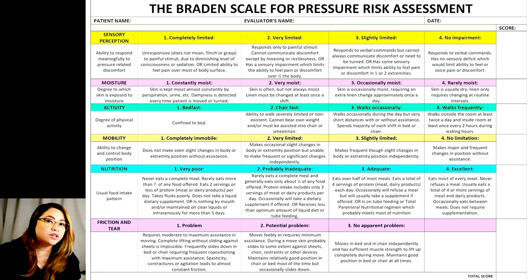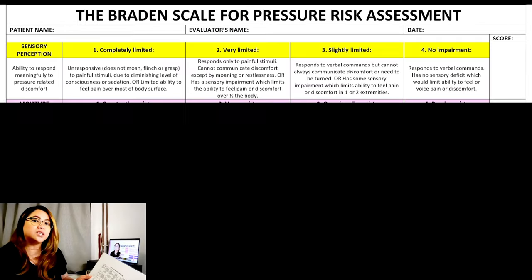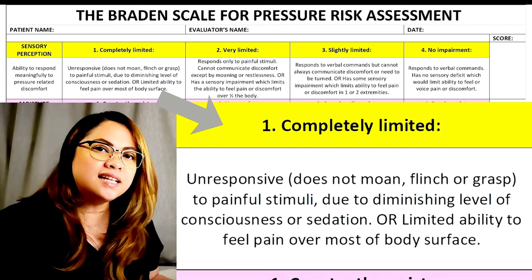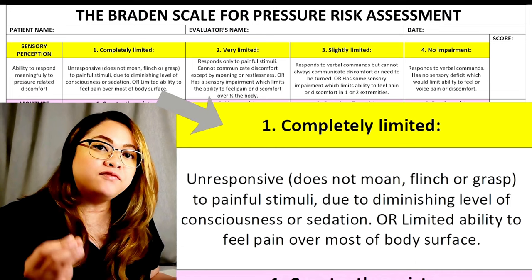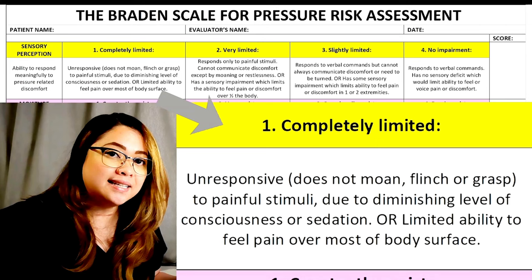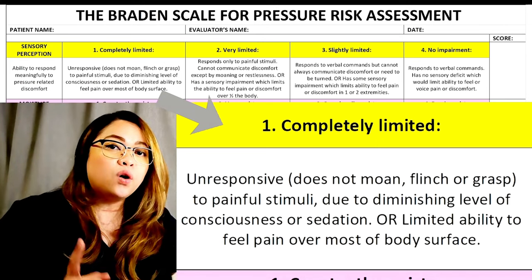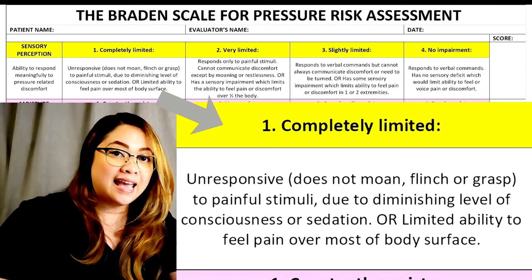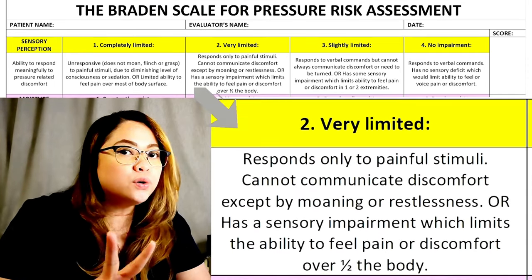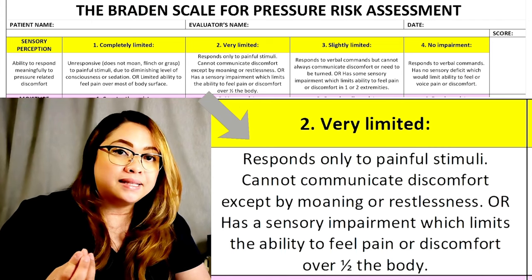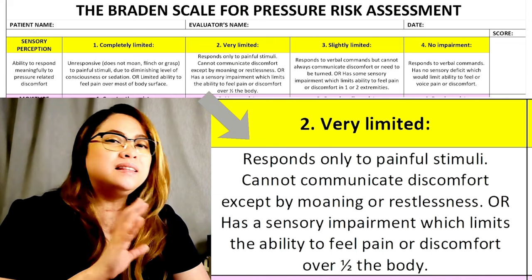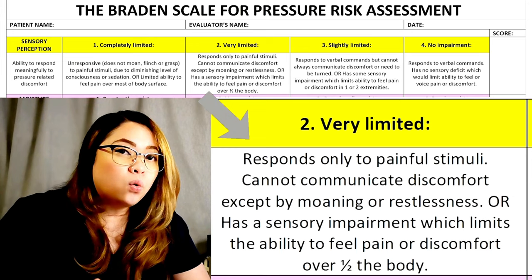The first subscale is sensory perception — the ability to respond meaningfully to pressure-related discomfort. Rate one if the patient is completely limited, meaning unresponsive, does not moan, flinch, or grasp, due to a diminished level of consciousness or sedation, or has limited ability to feel pain over most of the body. Rate two if very limited — the patient is able to respond to stimuli but can only communicate discomfort by moaning or being restless, or has a sensory impairment limiting the ability to feel pain over half of the body.